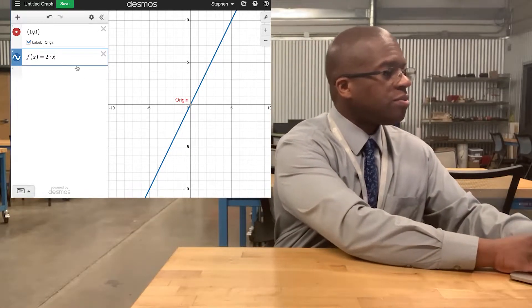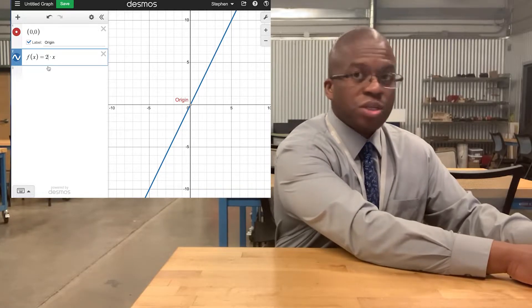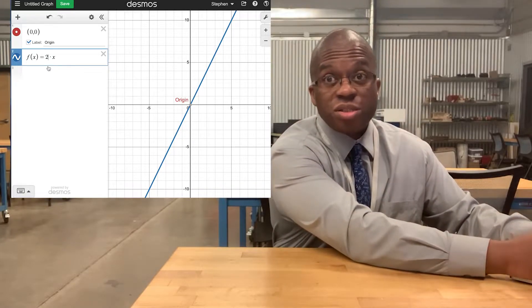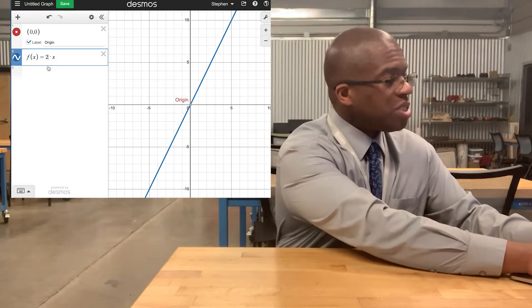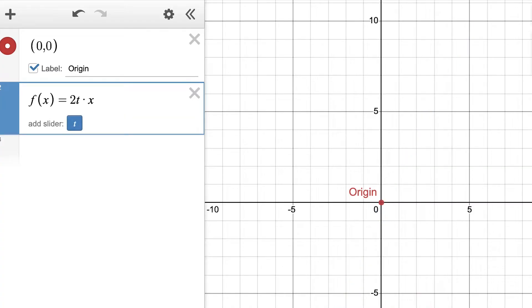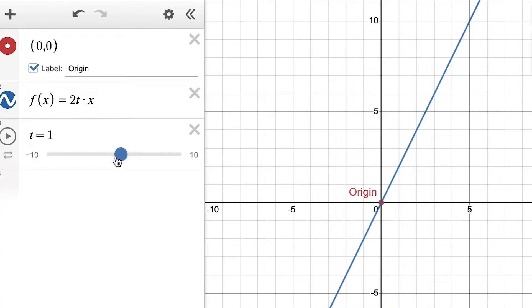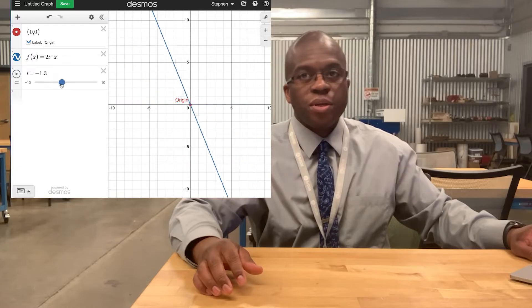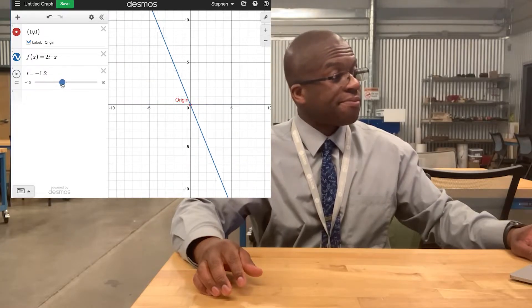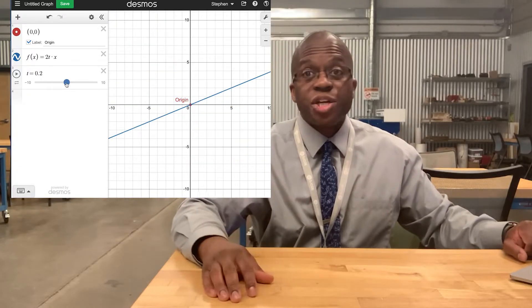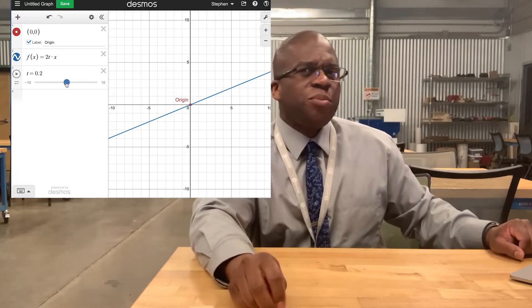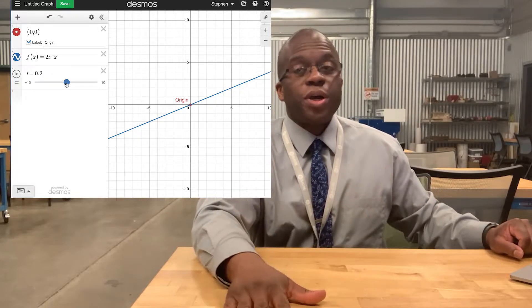I could change that. Let's say I don't want it to be just a constant 2. Maybe I want it to be a variable like t. Now I can adjust the value of t and change my graph. That's kind of going to be key to what we're creating here.